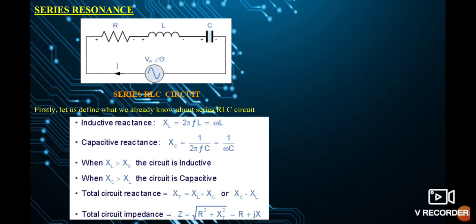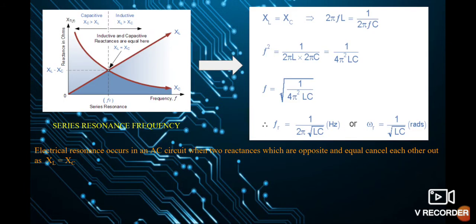When XL is greater than XC, the circuit is inductive, and when XC is greater than XL, the circuit is capacitive. The total circuit reactance XT equals XL minus XC for high inductive value, or XC minus XL for high capacitive value. The total circuit impedance is represented as Z equals root over of R squared plus XT squared, that is R plus jX in rectangular form.